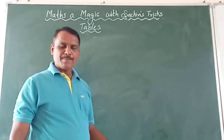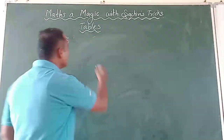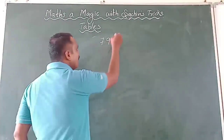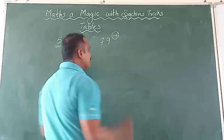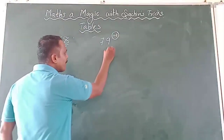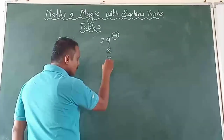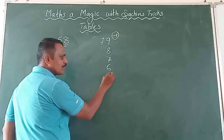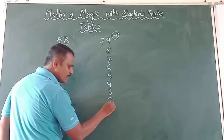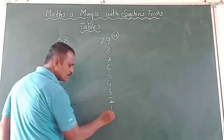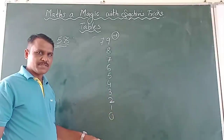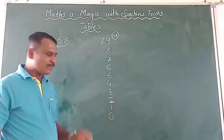Let's take one more example — 79. Now 9 is at the unit place. So I will subtract 1, because 10 minus 9 is 1. Starting from 9: 9 minus 1 is 8, 8 minus 1 is 7, 7 minus 1 is 6, 6 minus 1 is 5, 5 minus 1 is 4, 4 minus 1 is 3, 3 minus 1 is 2, 2 minus 1 is 1, 1 minus 1 is 0. Count: 10 times. Zero is always at the 10th place.